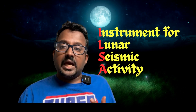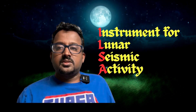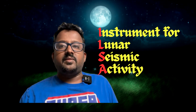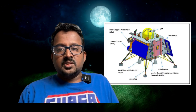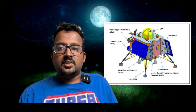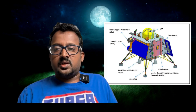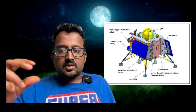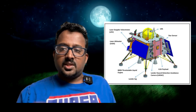The next one is ILSA — I-L-S-A — Instrument for Lunar Seismic Activity. It mainly analyzes whether there is seismic activity in the polar area, how frequent it is, and also analyzes how the crust and the mantle look.